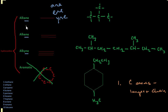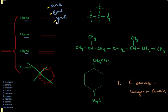The difference in naming alkanes, alkenes, and alkynes is going to be the parent name of our compound. That's going to be A-N-E for an alkane, E-N-E for an alkene, and Y-N-E for an alkyne.